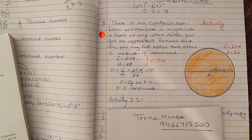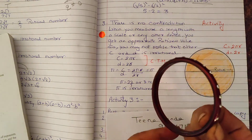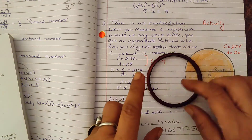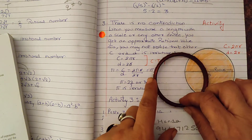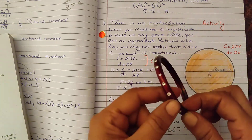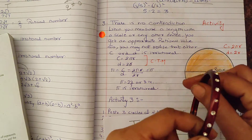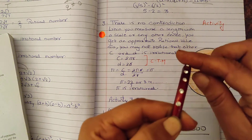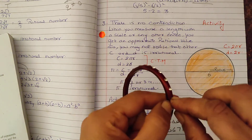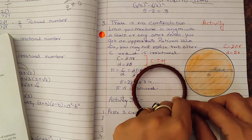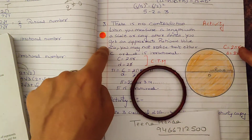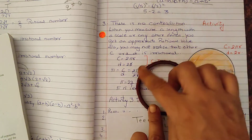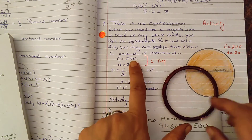How can we measure the circle? For example, I will measure it using a bangle — this is also an example of a circle. If I have to measure this, I am going to measure the length of this circle with the help of a thread. I will put the thread around it, mark the thread, then put the thread on the scale to get its length. This measurement is known as the circumference.